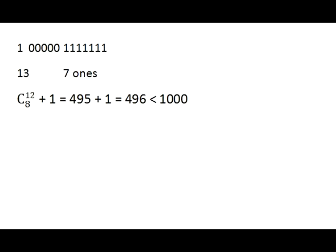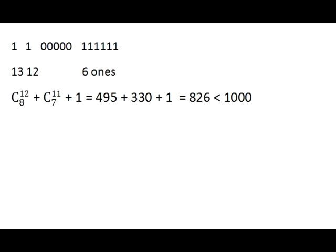Let's try the hurdle in place 13. That works. The number of combinations of 12 choose 8 plus 1 is equal to 496, which is less than 1000. The hurdle in place 12 works as well, because the number of combinations of 11 choose 7, when added to the previous total, gives us a new total that is less than number 1000.